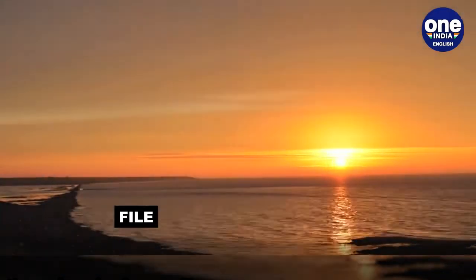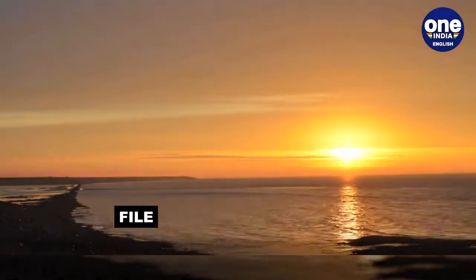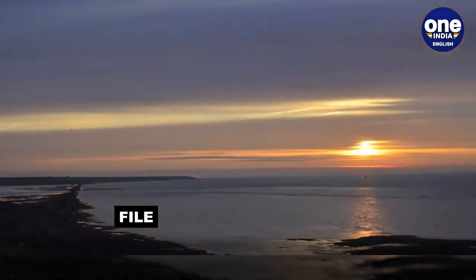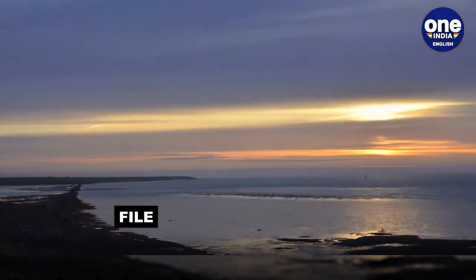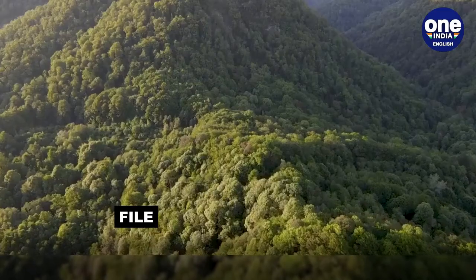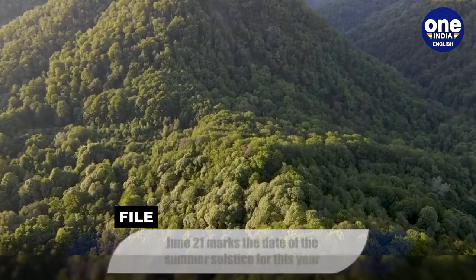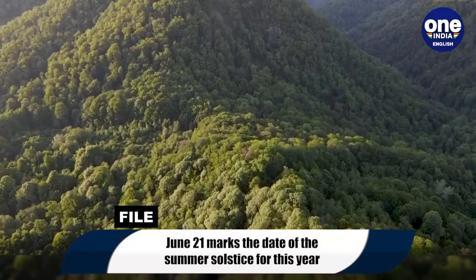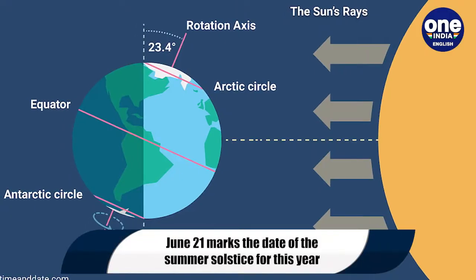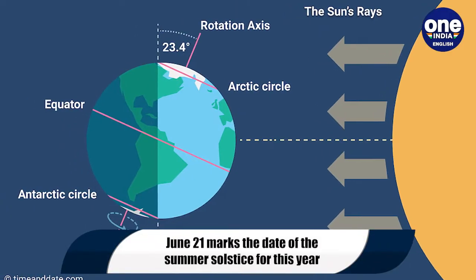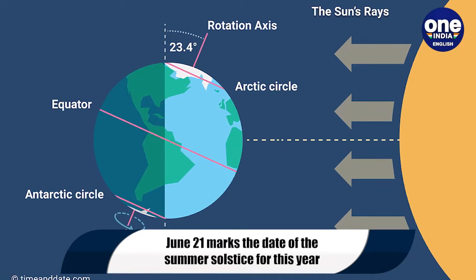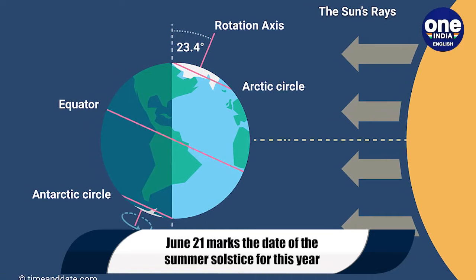It is the exact opposite in the southern hemisphere, where it is the shortest day for people living in those regions and marks the onset of winter. The summer solstice occurs when the Earth tilts towards the Sun at its maximum during its orbit.